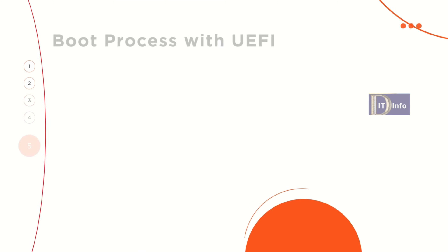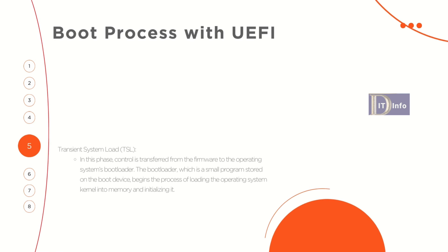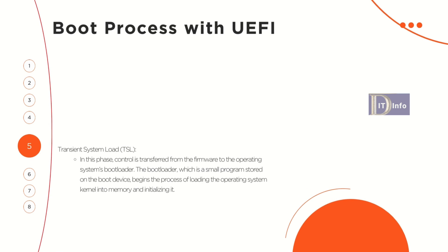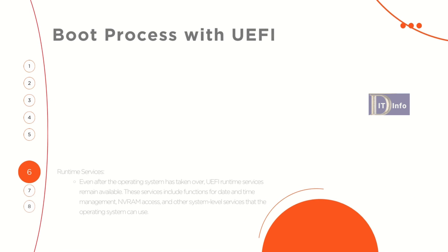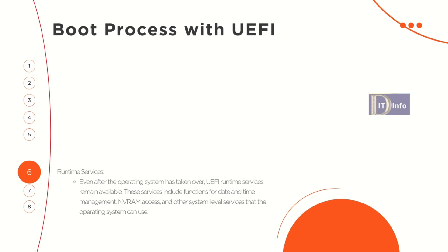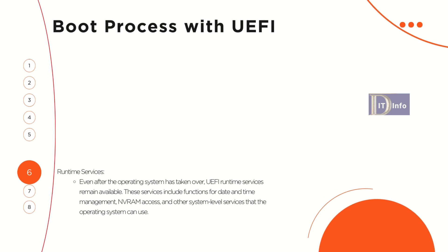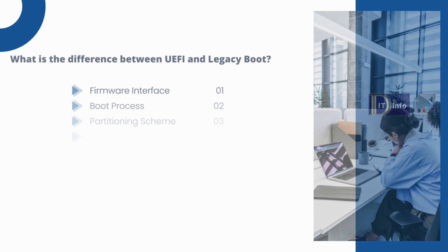In the Transient System Load (TSL) phase, control is transferred from the firmware to the operating system's bootloader. The bootloader, a small program stored on the boot device, begins loading the operating system kernel into memory and initializing it. Even after the operating system has taken over, UEFI runtime services remain available, including functions for date and time management, NVRAM access, and other system-level services.